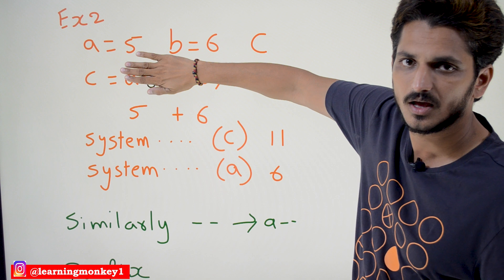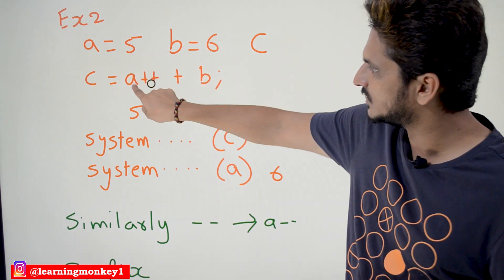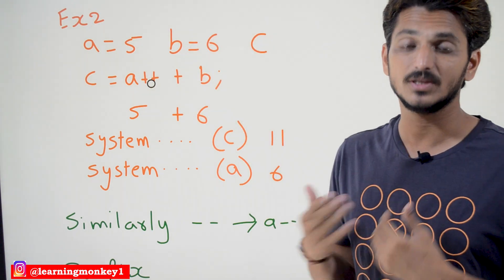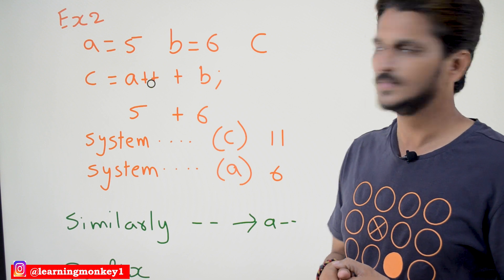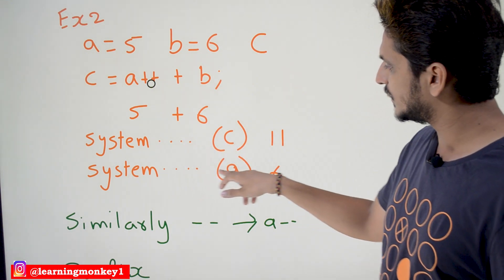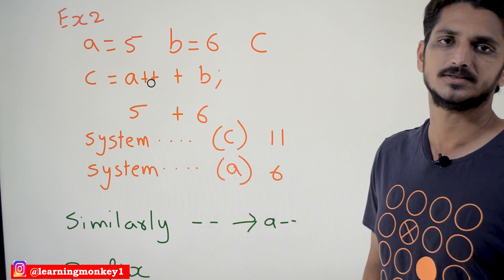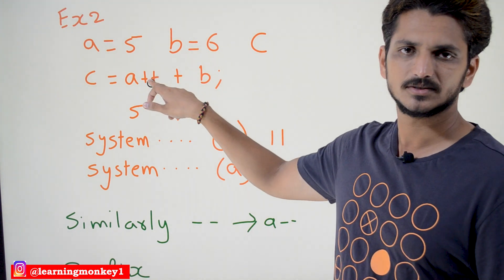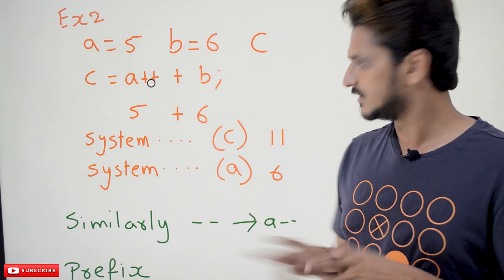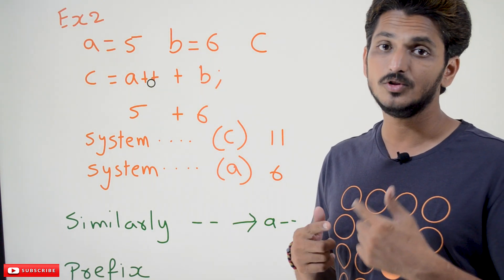After completion of this statement, the value of a becomes 6. But within this statement, the value of a used is 5 — first assign the value, then after completion of the statement increment a. That is the meaning of postfix increment. So System.out.println(c) displays 11, and System.out.println(a) displays 6. Similarly with a--, the value of c is still 11, but a is decremented: a = a - 1, so a displays 4.